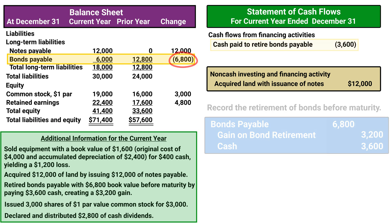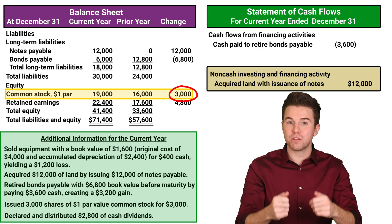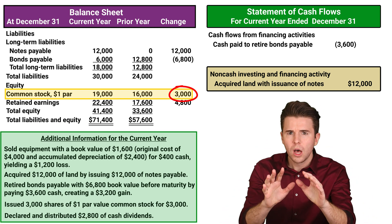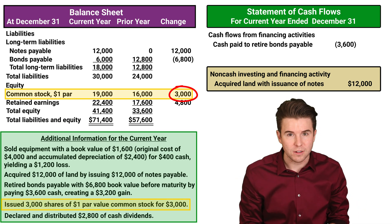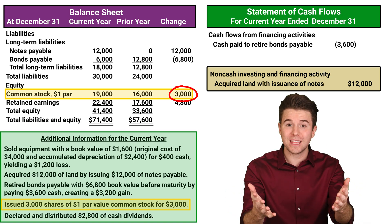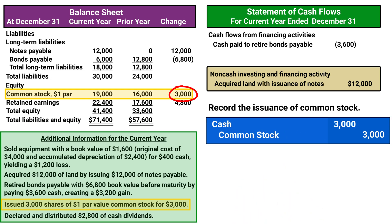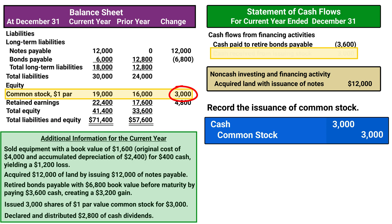Back to our balance sheet, we now move on to the equity section and see that common stock increased by $3,000. Looking at our additional information, the company issued 3,000 shares of $1 par value common stock for $3,000. The journal entry would look something like this. The company received $3,000 in cash from the sale of stock. We would report this inflow as cash received from issuing stock under financing activities.